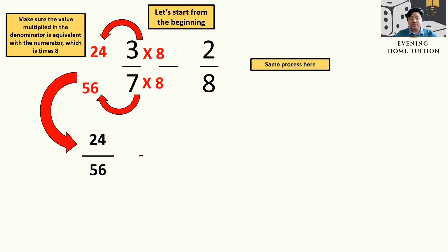Same process goes with the other fraction. Here, you times 7, make it 56, and above 2 times 7 equal to 14. So 14 over 56.